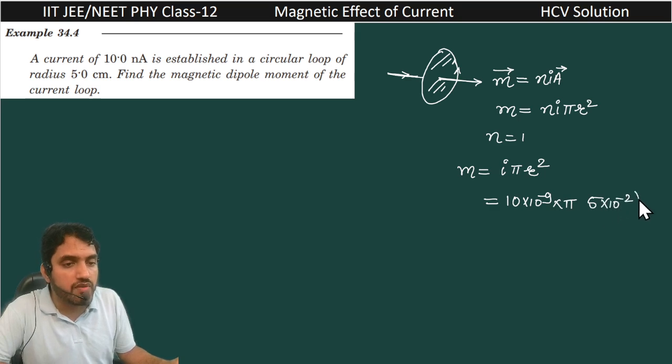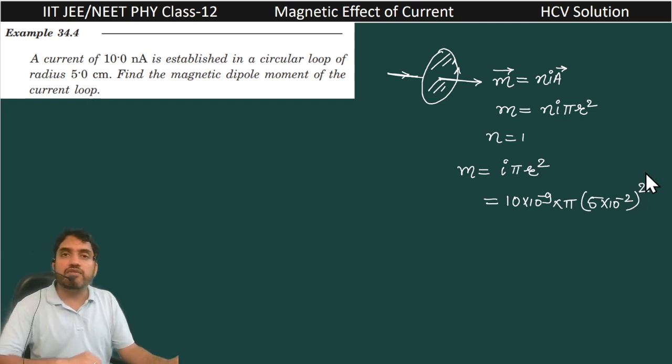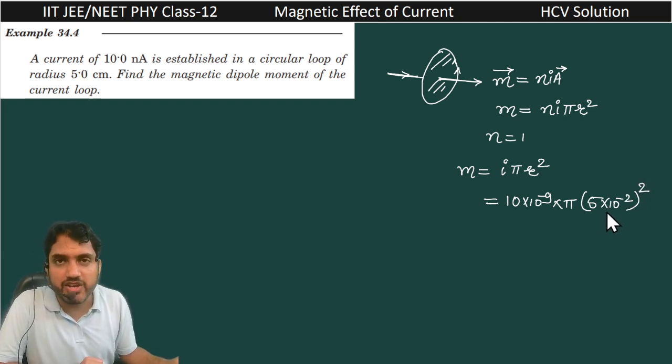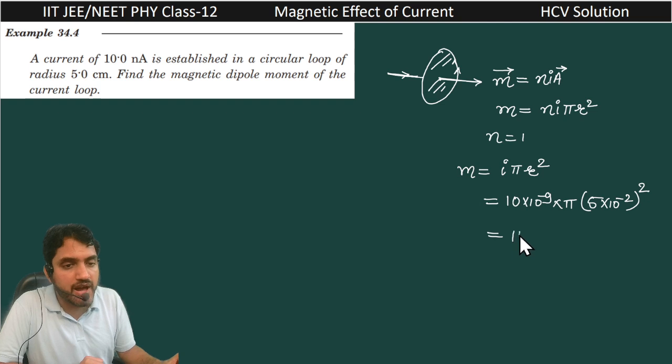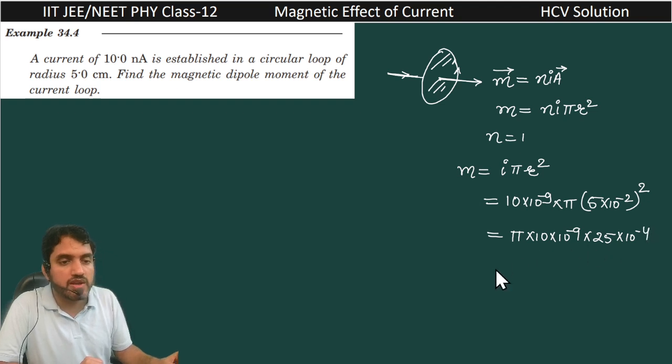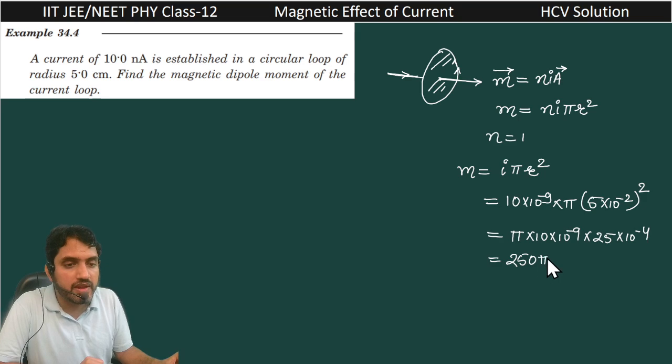Why we are multiplying this 10 raise to power minus 2? That is to convert centimeter into meter. And square is there, so you can write this pi into 10 into 10 raise to power minus 9 into 25 into 10 raise to power minus 4. So it will become 250 pi into 10 raise to power minus 13.